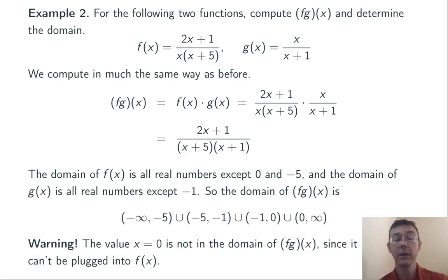Now you have to be very careful. x equals 0 is not in the domain of f times g of x, since it can't be plugged into f of x. However, if you look at the simplified formula for f times g there in the middle of the slide, it does look like x can be plugged in. You have to make sure when you're computing domains of sums, differences, products, and quotients that you're looking at the unsimplified version so that you don't get the wrong domain.